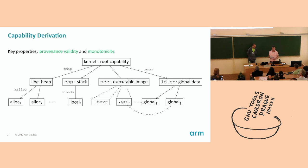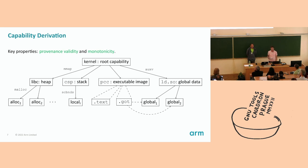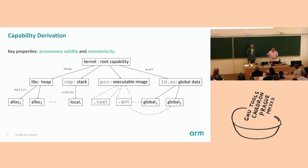There are a couple of important properties of CHERI systems that are enforced architecturally. One is provenance validity: every valid capability must have been derived from another valid capability, forming a tree of derivations going back to the root capability. The other property is monotonicity: capability derivations cannot increase in privilege. On this slide we have a simplified illustration of how such a tree might look, showing some of the different kinds of capabilities in a typical user space process. On the left we have heap memory — libc gets heap memory from the kernel via mmap, and when user code calls malloc, that further narrows the bounds of the capability to the size of the allocation. Each solid arrow here is a monotonically decreasing capability derivation.